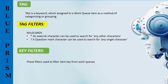A tag is a keyword which is assigned to a work queue item as a method of categorizing or grouping. Tags can be used when getting items using Get Next Item from the work queue. We can filter the items to retrieve by the presence or absence of a specific tag by giving appropriate arguments to the tag filter input parameter of the Get Next Item action. As a tag filter, we can use two symbols: plus sign or minus sign.